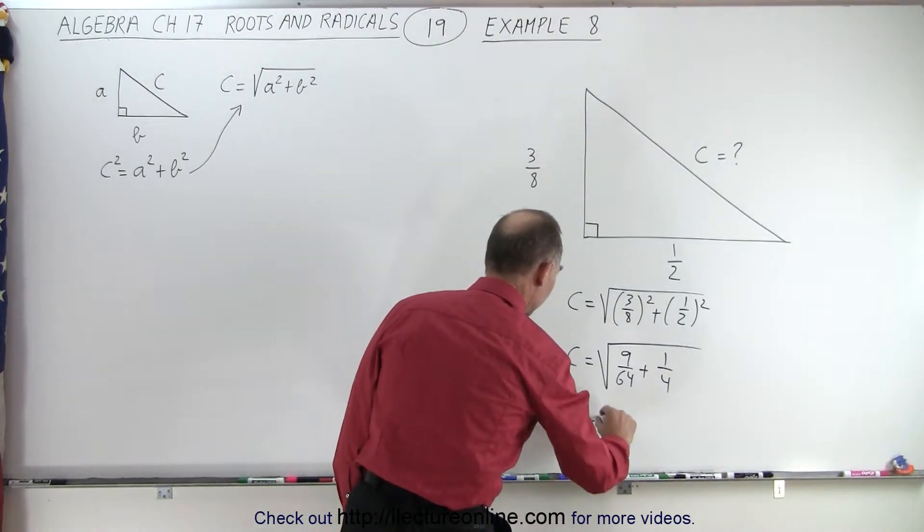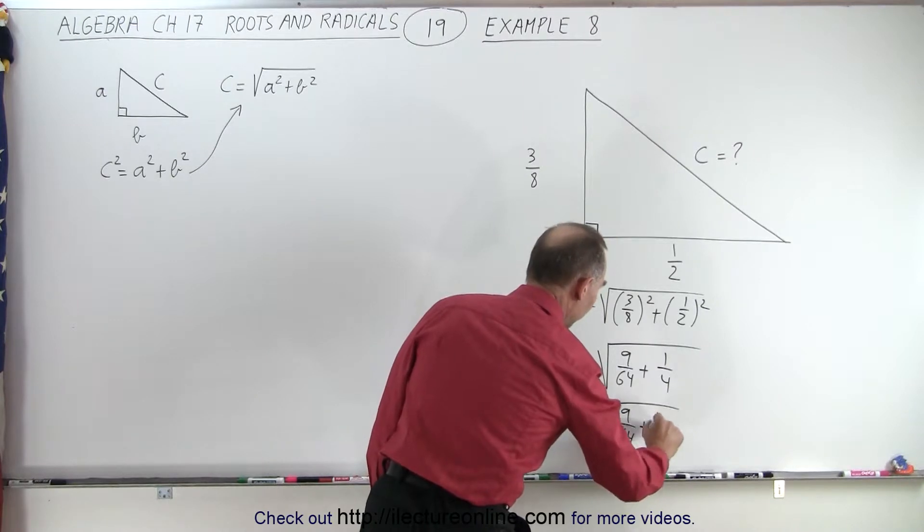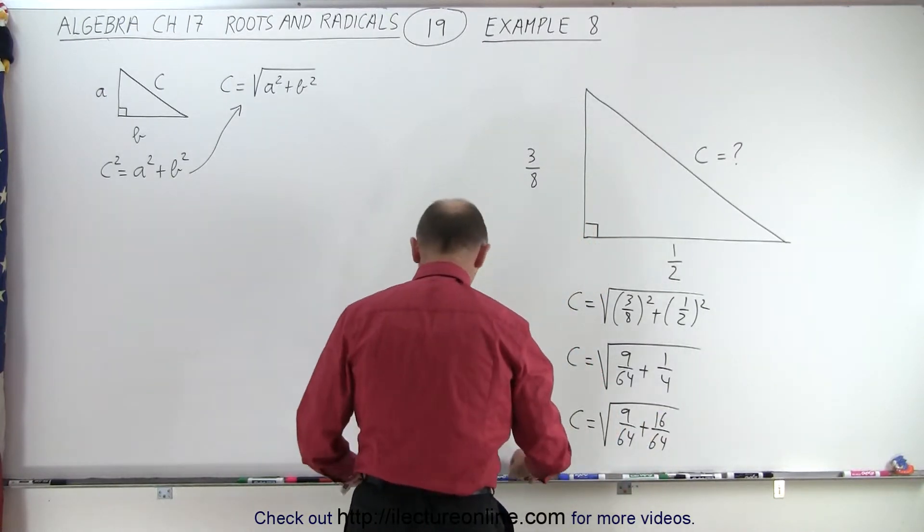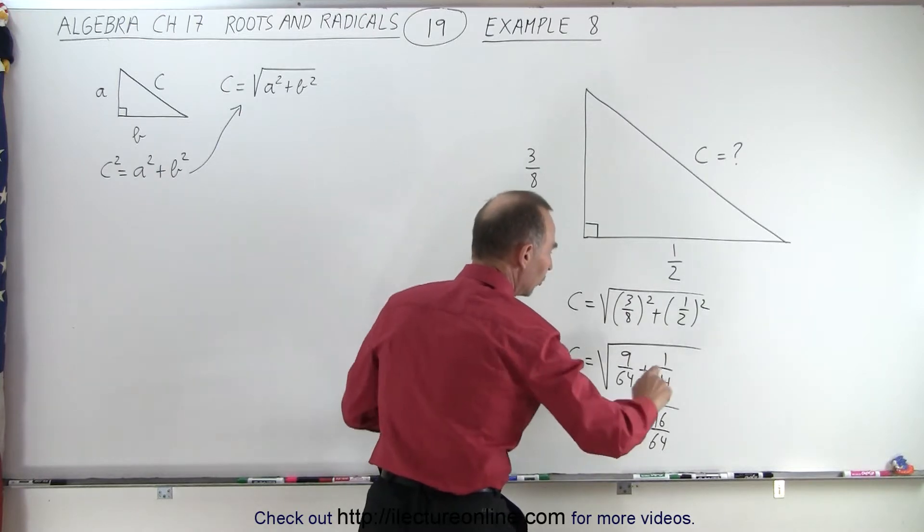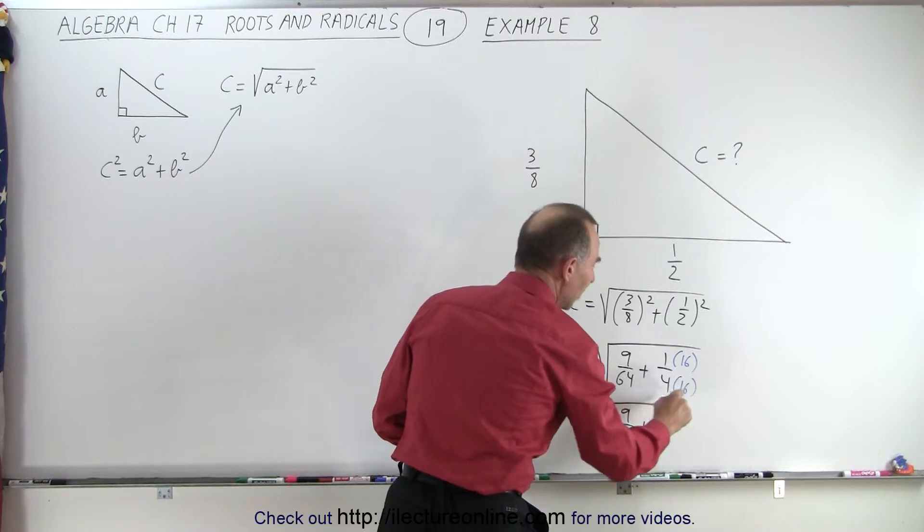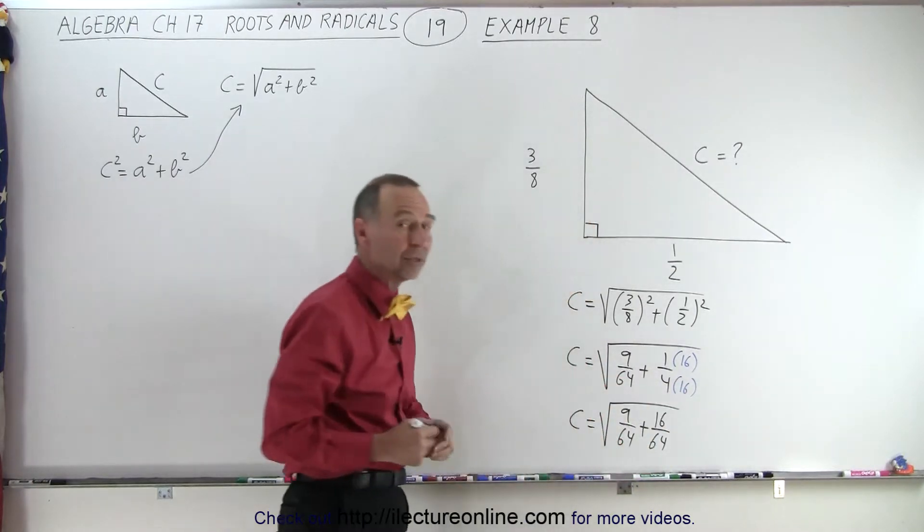So we can write that c is equal to the square root of 9 over 64 plus 16 over 64. How did I figure that out? Well, I simply multiplied both the numerator and the denominator by 16, because 4 times 16 is 64, so I can get the same common denominator.